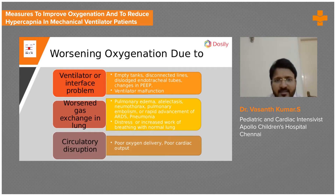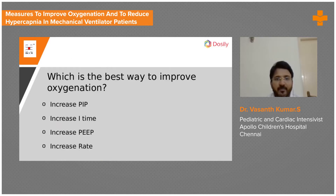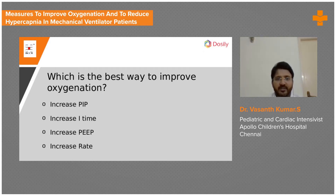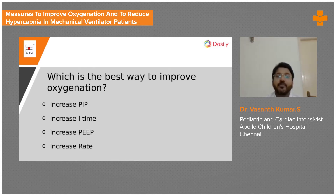Based on this, the clinical approach is: first check the oxygen source. If that's okay, check if there is any problem in the underlying disease — it could be pneumonia, ARDS, pulmonary embolism, or collapse. The question now is: what is the best single way to improve oxygenation — is it increasing PIP, I-time, PEEP, or respiratory rate?